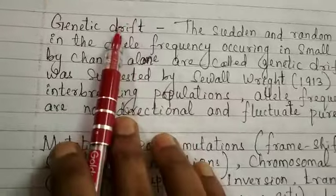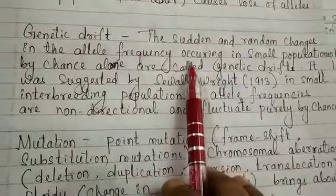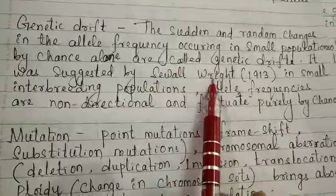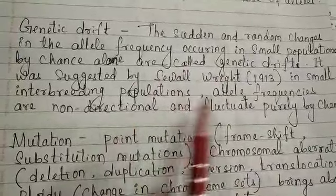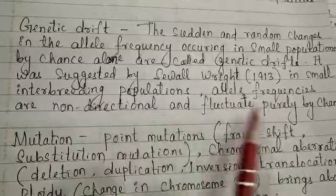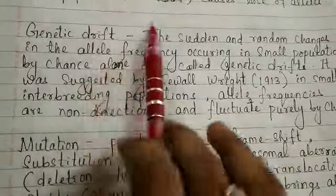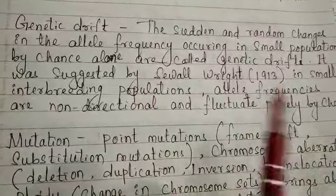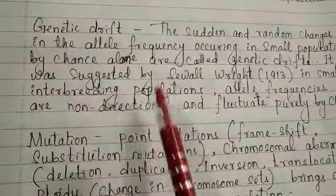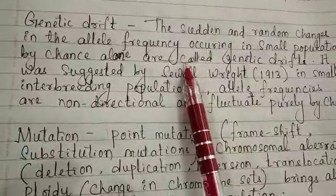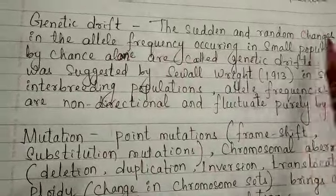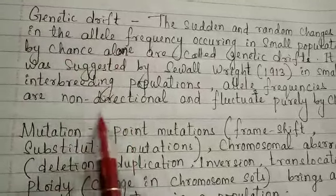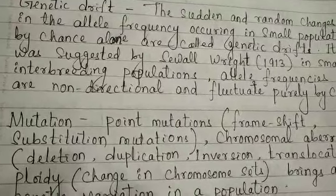Next comes genetic drift. The sudden and random changes in allele frequency occurring in a small population by chance alone is called genetic drift. It was suggested by Sewall Wright, who said allele frequencies are non-directional and fluctuate purely by chance. We will discuss genetic drift in detail in the next video, as questions come from here as well.